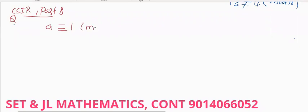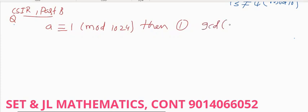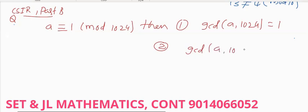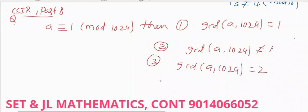Given A congruent to 1 modulo 1024, which of the following is correct? Option 1: GCD of A comma 1024 is equal to 1. Option 2: GCD of A comma 1024 is not equal to 1. Option 3: GCD of A comma 1024 is equal to 2. Option 4: GCD of A comma 1024 is greater than or equal to 2.